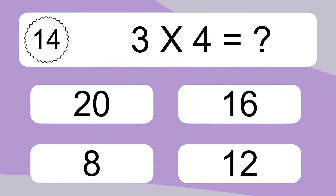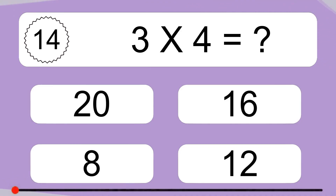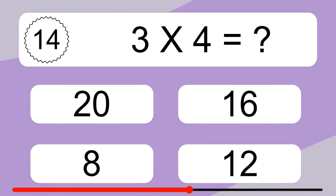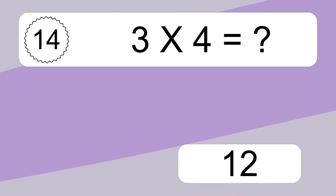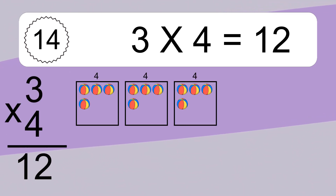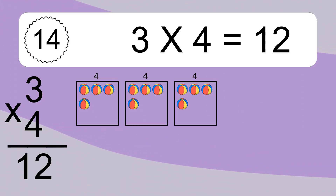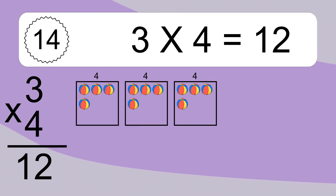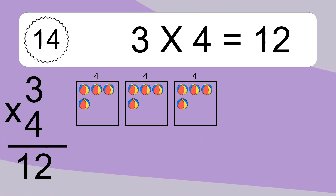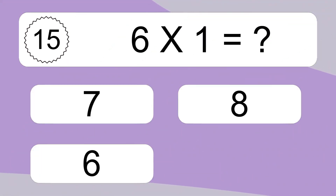3 times 4 equals what? 3 times 4 equals 12. We have 3 boxes and each box has 4 colorful balls inside. If you count all the balls in all the boxes together, you will have 3 times 4 balls. This equals 12 balls.